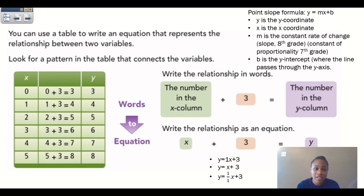If we wanted an equation in point-slope form, we write Y equals one times X plus three, or simply Y equals X plus three. To graph this, we can also write it as Y equals one-over-one times X plus three. Since M equals one, we rise one and run one to plot each point: start at the Y-intercept, rise one, run one, put your point, and repeat.